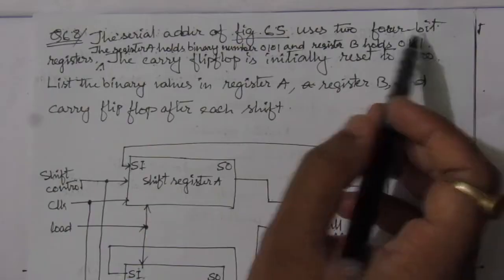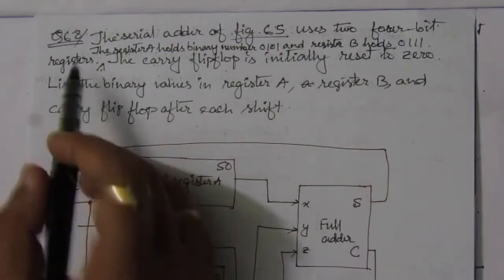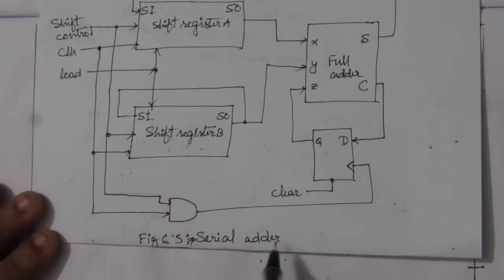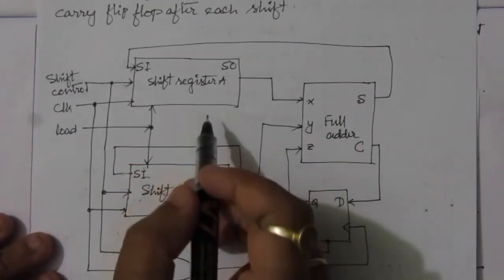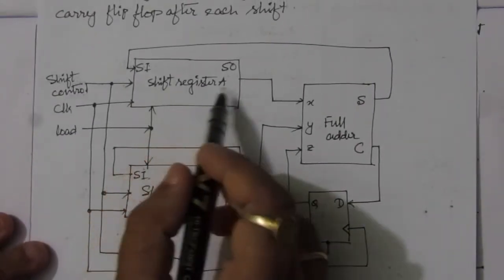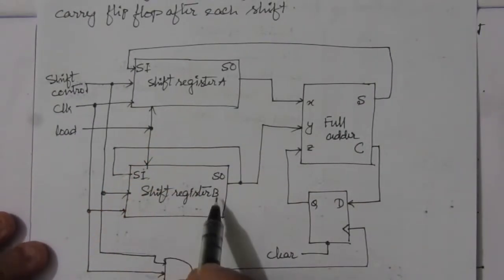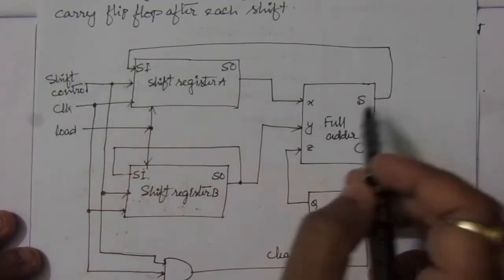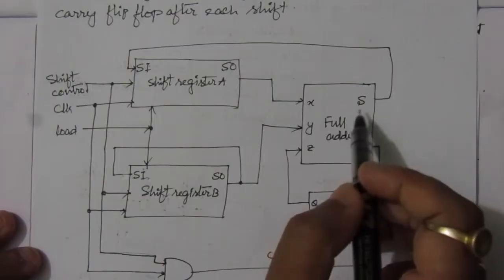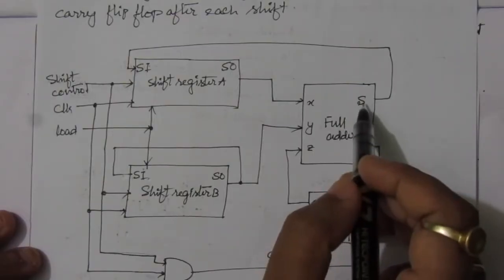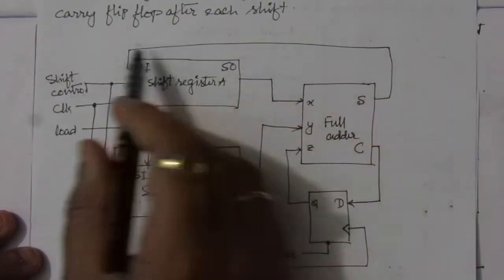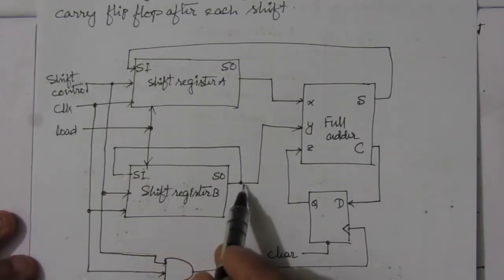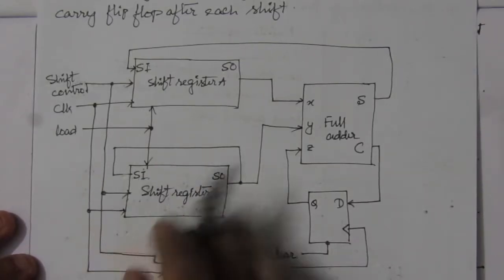This is the figure 6.5 — a serial adder circuit. Here we have two registers: shift register A and shift register B. For register A, the serial input is fed back from the sum output of the full adder circuit. For register B, the serial output is fed back to the serial input.